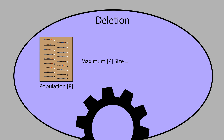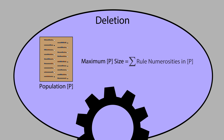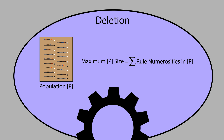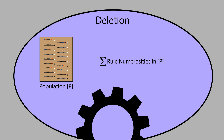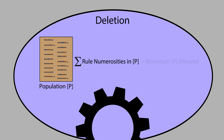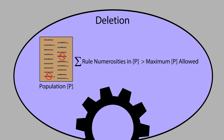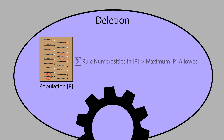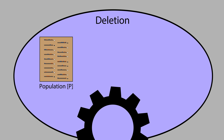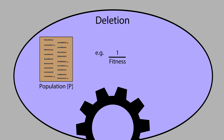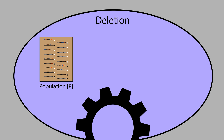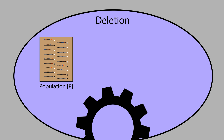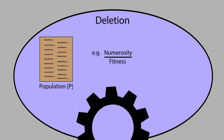The maximum population size is the sum of all rule numerosities in the population. If the number of classifiers in the population is larger than this maximum, classifiers are deleted in turn until that size limit is met. Classifiers are selected from the whole population for deletion with a probability inversely proportional to their fitness. Other factors can be applied to increase the probability of deletion, such as the classifier's numerosity.